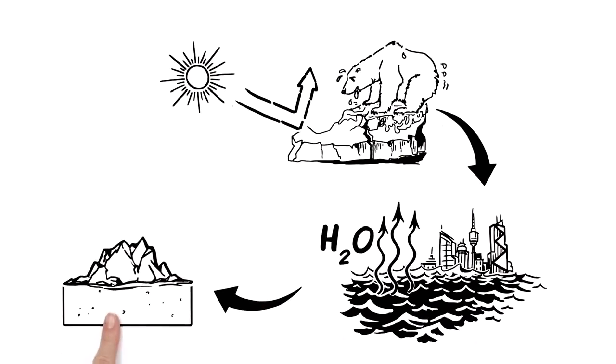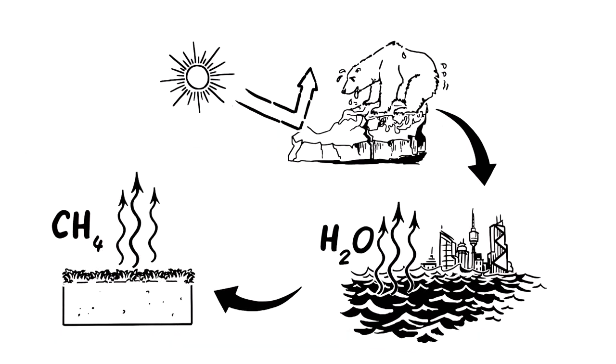Also, grounds which stored centuries-old methane are thawing. The poisonous gas escapes and worsens the greenhouse effect. The vicious cycle starts again.